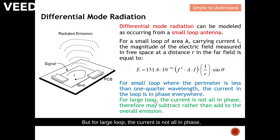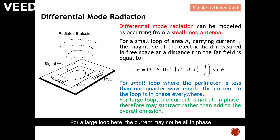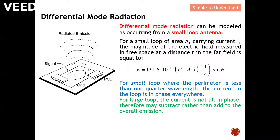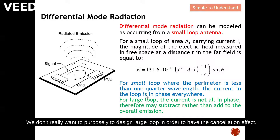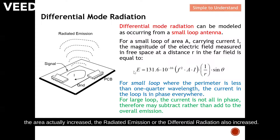For a small loop where the parameters are less than a quarter wavelength, the current in the loop is all in phase. For a large loop, the current is not all in phase and may subtract rather than add to the overall emission. However, by design we should not rely on a large loop for cancellation — we want to make the loop as small as possible so that emission is reduced. When you increase the loop area, the differential mode radiation also increases, so it is not desired.